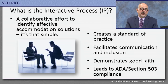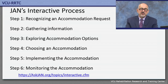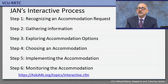JAN's six-step interactive process: Step one is recognizing an accommodation request. There are two pieces — the medical condition and the challenge at work related to that condition. Everyone in your organization needs to be able to recognize this. Supervisors may not be the ones who provide accommodations, but they need to recognize when one has been requested so they can refer the person to human resources, employee relations, or your diversity and inclusion team, wherever your accommodation process sits.